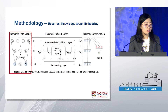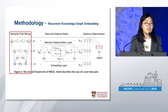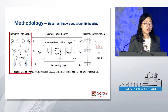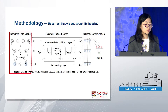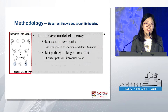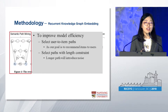Now I will go through the details of the different modules of our proposed method. The first is semantic path mining. This module aims to find the connected paths between a user and item pair. There can be a huge number of such paths, so to improve model efficiency we designed two strategies to reduce the number of paths. First, we only select user-to-item paths, as our goal is to recommend items to users. Second, we only select paths with a length constraint, since as previous work showed, longer paths generate remote neighbors that introduce noise.